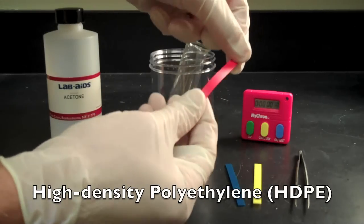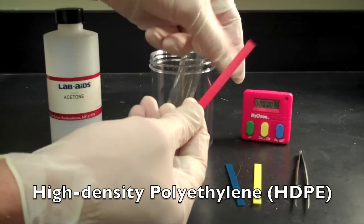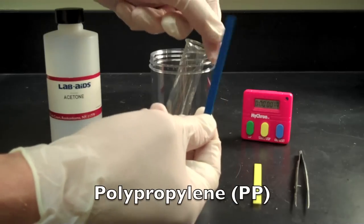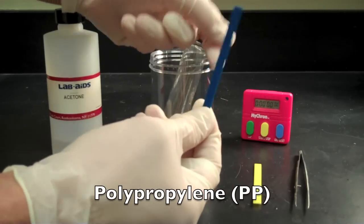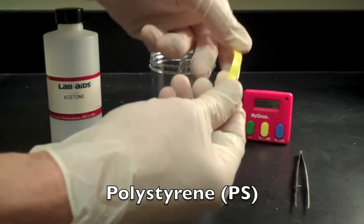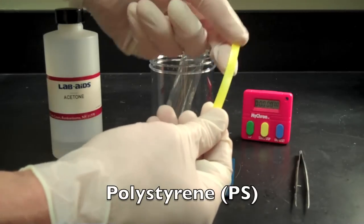The red strip is high-density polyethylene. It's fairly flexible. The blue strip is polypropylene. As you can see, it too is fairly flexible. And finally, the yellow strip is polystyrene. It's very stiff.